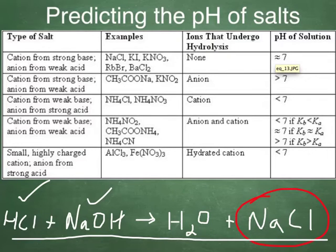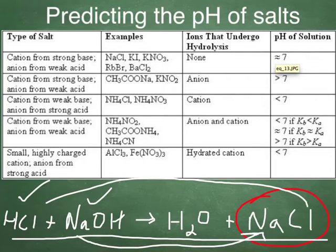Now, I want you to pay attention to this. Notice, the cation of the base forms the cation of the salt, and the anion of the acid forms the anion of the salt. And that will always be the case. So the salt is made up of the cation of the base and the anion of the acid. Make sure you keep that in mind, because that's going to become important.